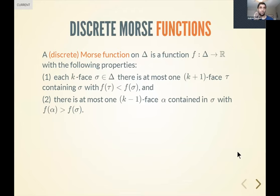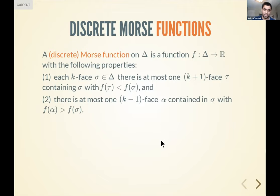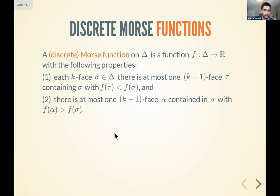A discrete Morse function — recall that smooth Morse functions were smooth functions on a compact manifold with non-degenerate critical points, meaning the Hessian matrix had non-zero determinant. In the discrete case, for each k-dimensional face in the complex, there is at most one higher-dimensional face containing it that has a smaller value. The function associates to every cell in the complex a real number, and the second condition says for every lower-dimensional boundary face, the value there is larger — and there can be at most one such cell.